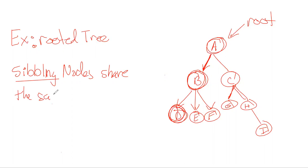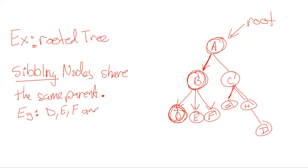Similarly, I is the child of H, H is the child of C, C is a child of A, D is the child of B, and so on. This is how parent nodes and child nodes are defined. A sibling — sibling nodes share the same parent. For example, D, E, and F are siblings.